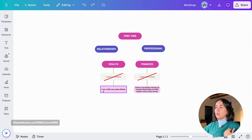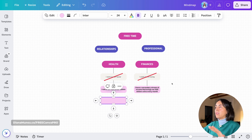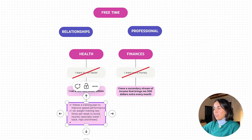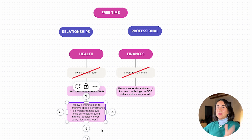So in this case, if I want to run 10k under 60 minutes, I know I need to have a stronger body. I'm going to add another box and start writing the tasks I need to do to achieve this. I'm going to write these sentences as if they already happened or are already happening — for example, 'I follow a training plan to improve speed performance,' and 'I do weight training two times per week to avoid injuries, especially lower back, hips and knees.' This is something I'm not currently doing but would like to do.